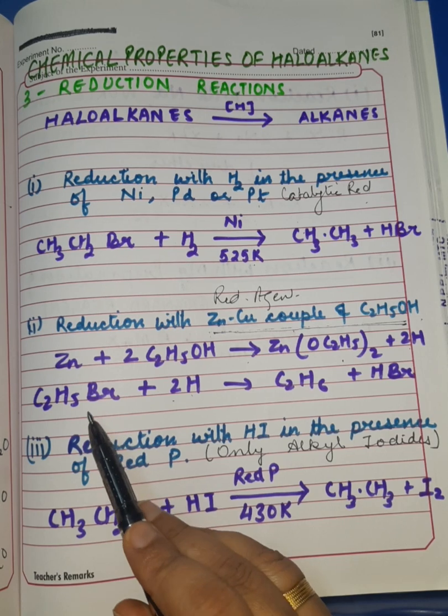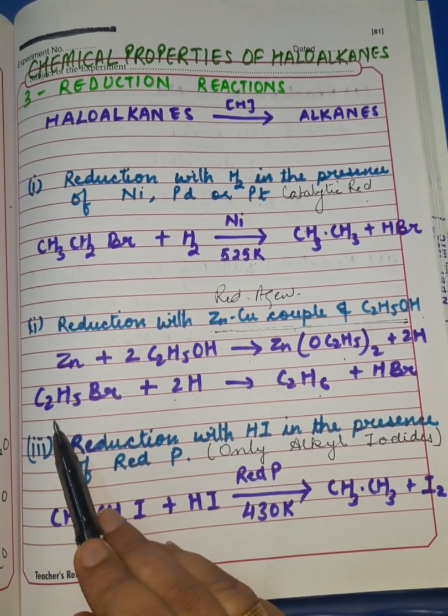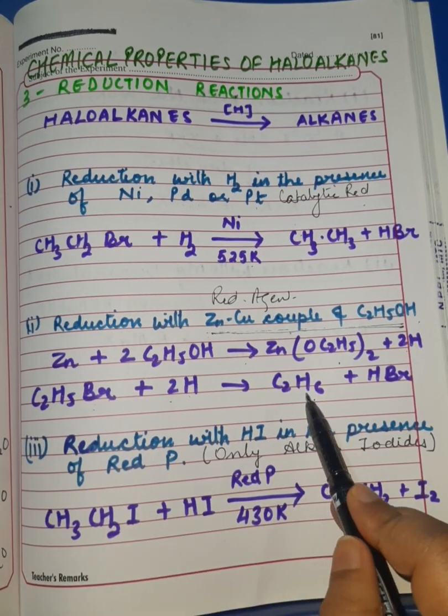You can see here ethyl bromide gets reduced to ethane.